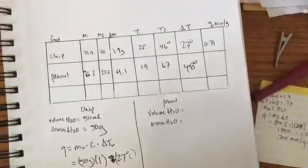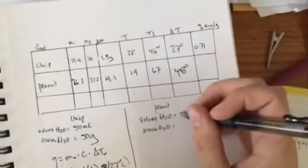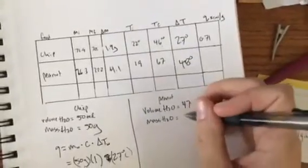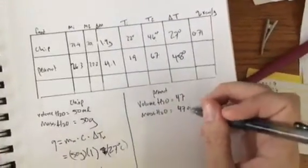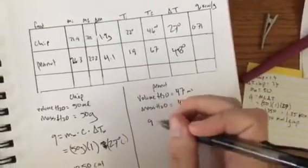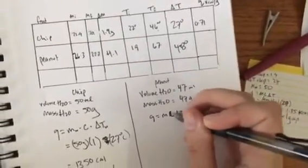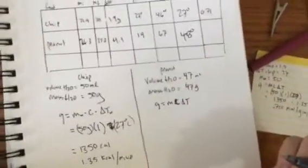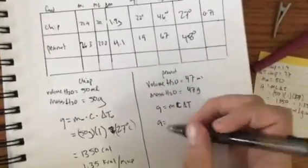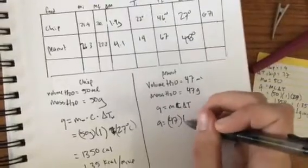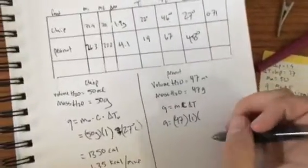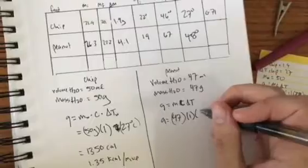What about with the peanut? What if we didn't use exactly 50 milliliters of water? Let's say we use 47 milliliters of water. That's totally fine, that's still 47 grams of water. We still use the same equation, q equals m c delta t. Q equals m cat, that's how I like to think about it. Now the mass of the water is 47, c is still 1, and the delta t for this one was 48 degrees.